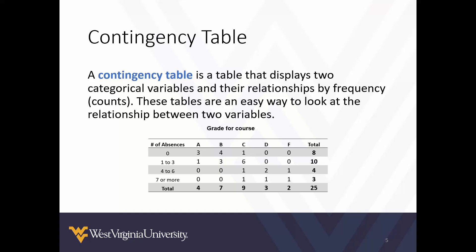Here's an example. Suppose we have a recording for students, their final grade for the course with a total of 25 students and their corresponding number of absences. For example, we can see that three students had zero absences and one student earned an F and had seven or more absences.